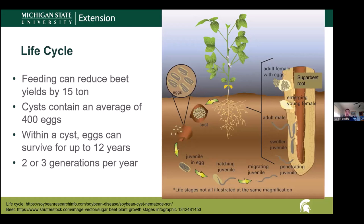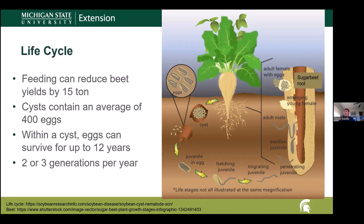Unfortunately, I was unable to find a diagram of the sugar beet cyst nematode life cycle, but it's similar enough to the soybean cyst nematode that I was able to borrow a diagram from our friends in soybeans. The life cycle starts with the eggs being present in the soil. Once a susceptible host, such as most sugar beets, are planted in that soil, they actually secrete a chemical into the ground that triggers the eggs to hatch. The juveniles then travel through the soil looking for the roots of their host. Once they find those roots, they'll actually penetrate it and secrete a chemical into the sugar beet, which causes the beet to make specialized feeding cells just for that nematode. The nematode then attaches to those cells and steals nutrients away from the host plant.